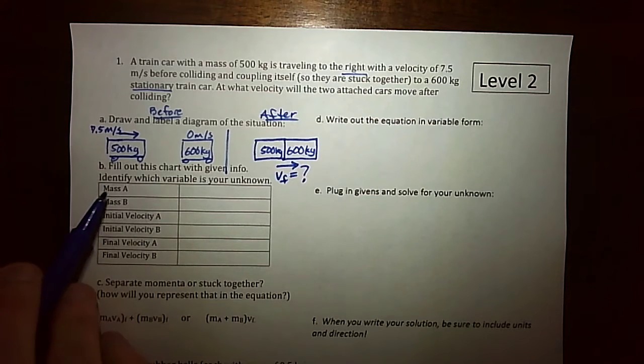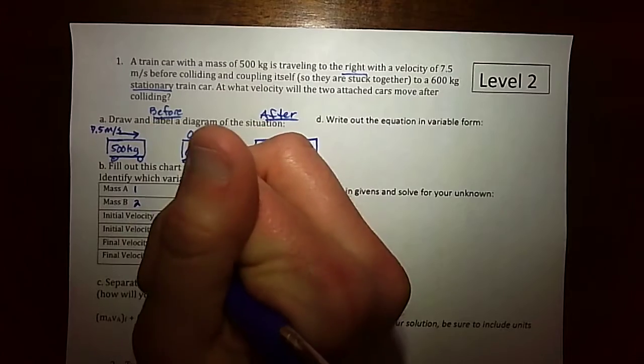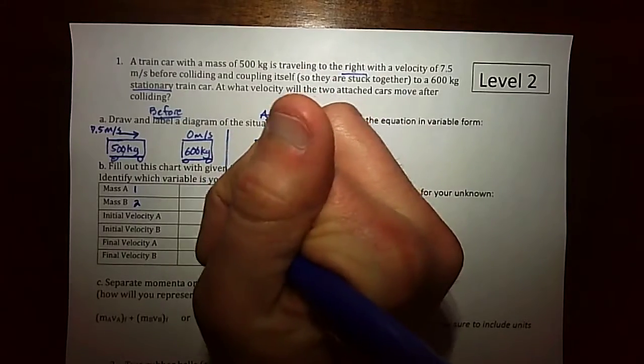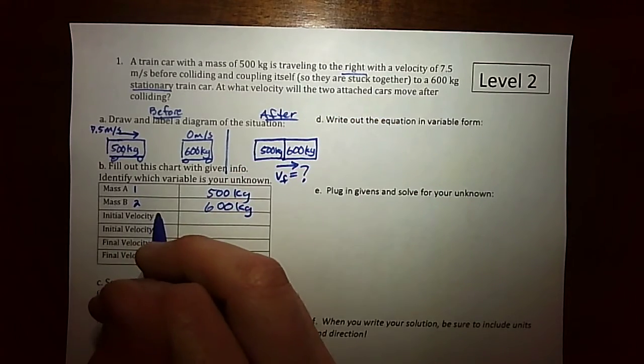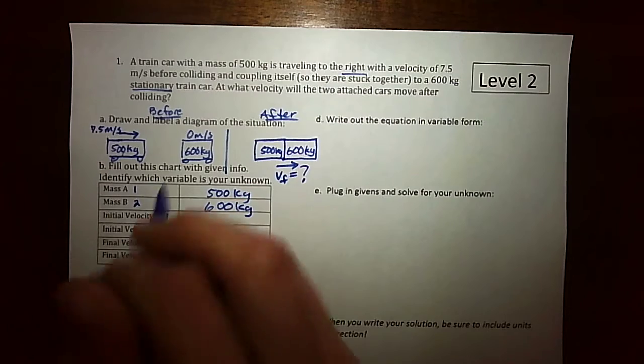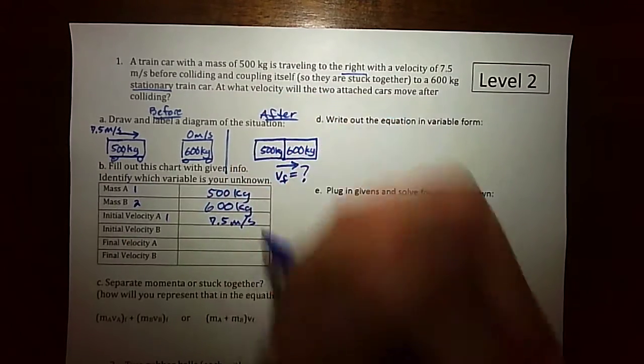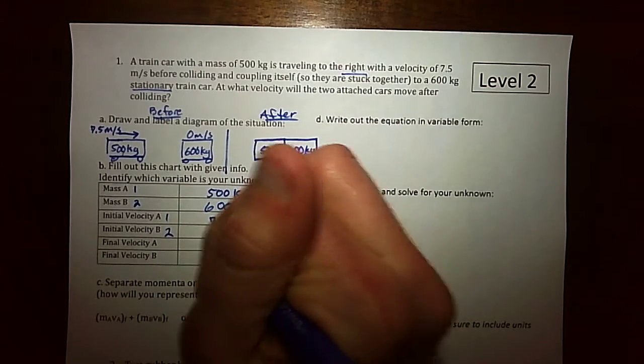So for this, we have mass A, mass B, we could also think of this as mass 1, mass 2. So mass 1 or mass A we could say is 500 kilograms, mass 2 is 600 kilograms, the initial velocity of mass A or mass 1 is 7.5 meters per second and for mass 2 or mass B it's stationary, so 0 meters per second.